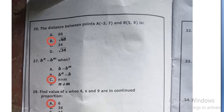A to the power N is equal to B to the power M when N is equal to M, option C.